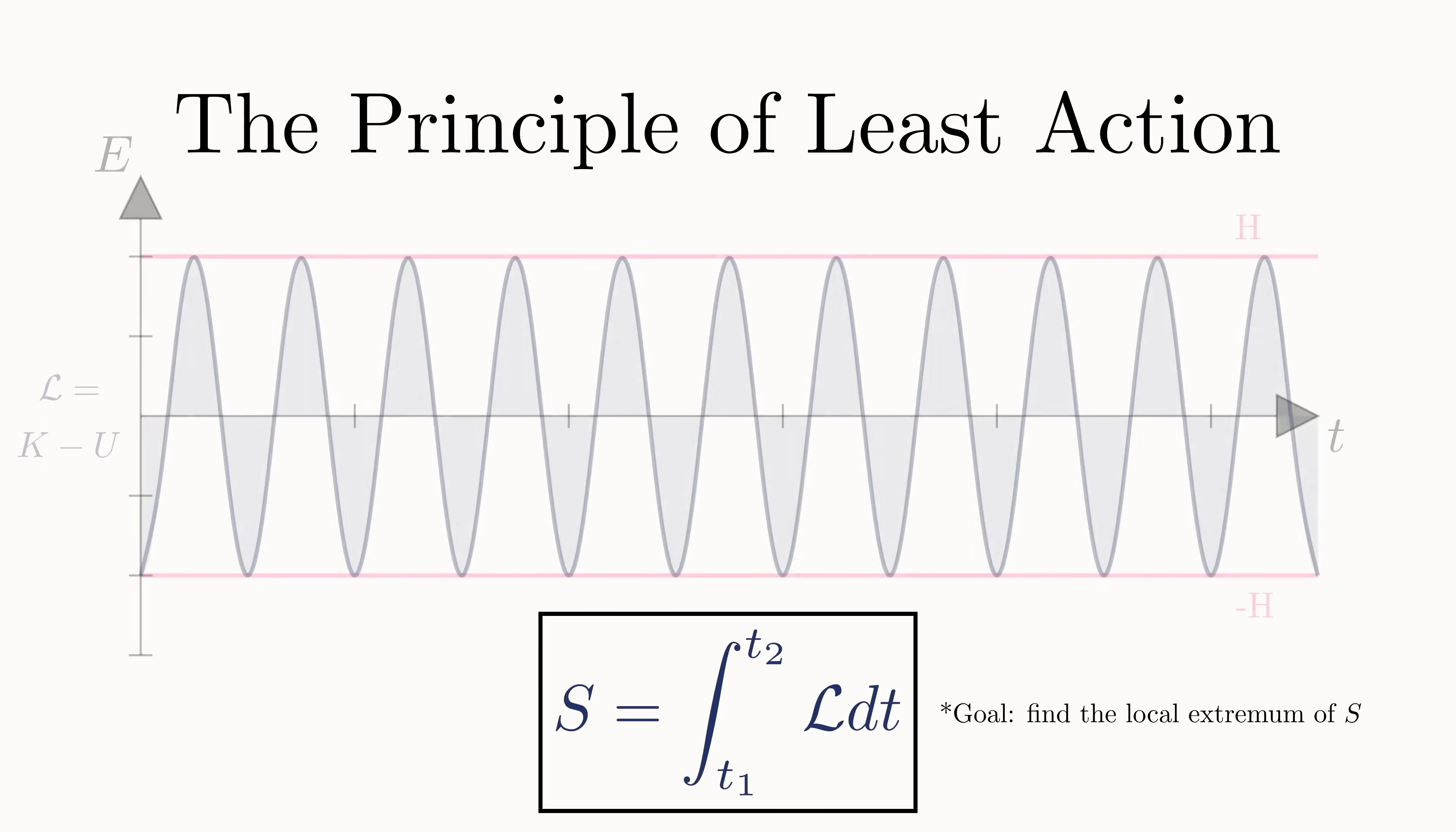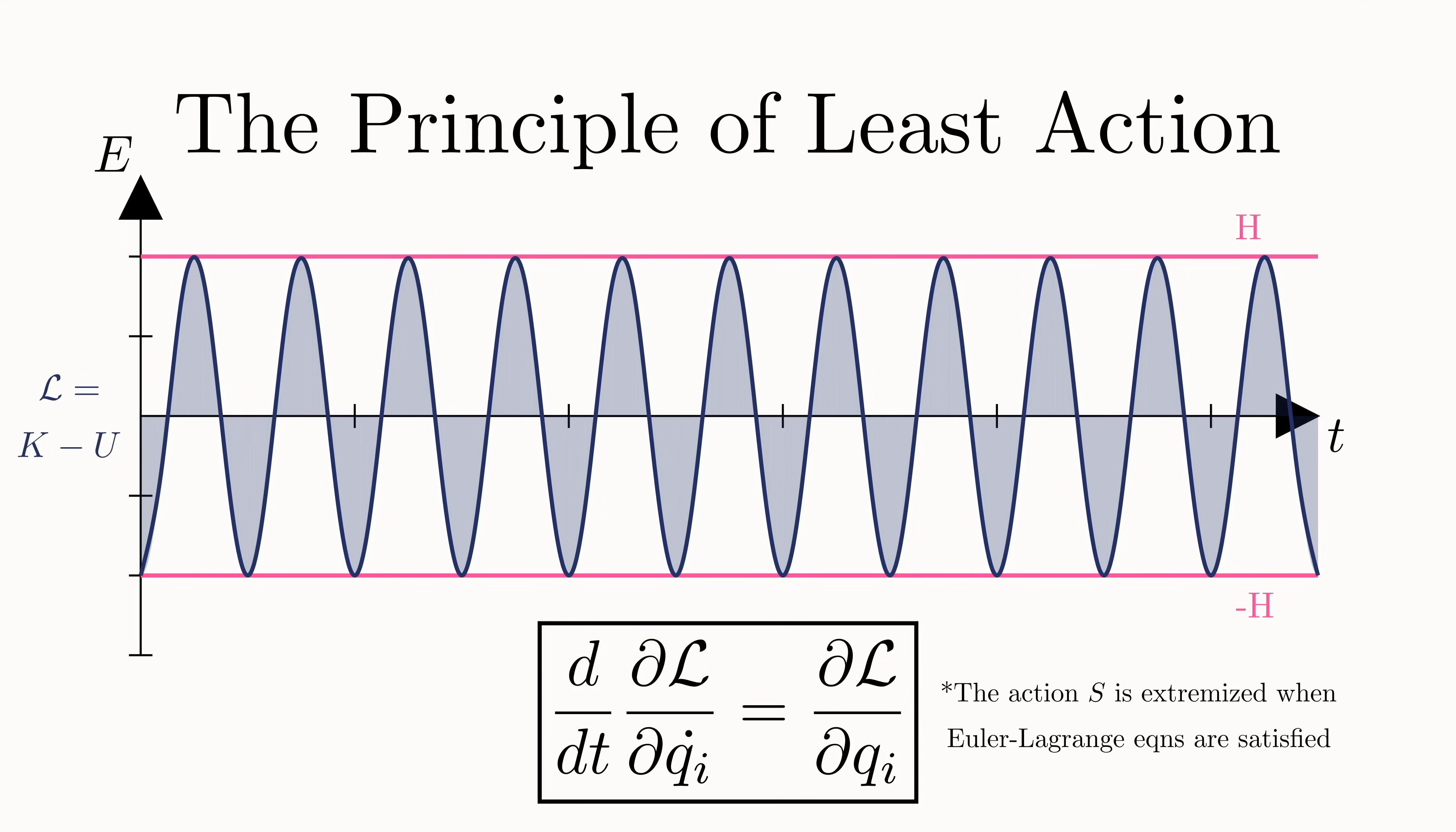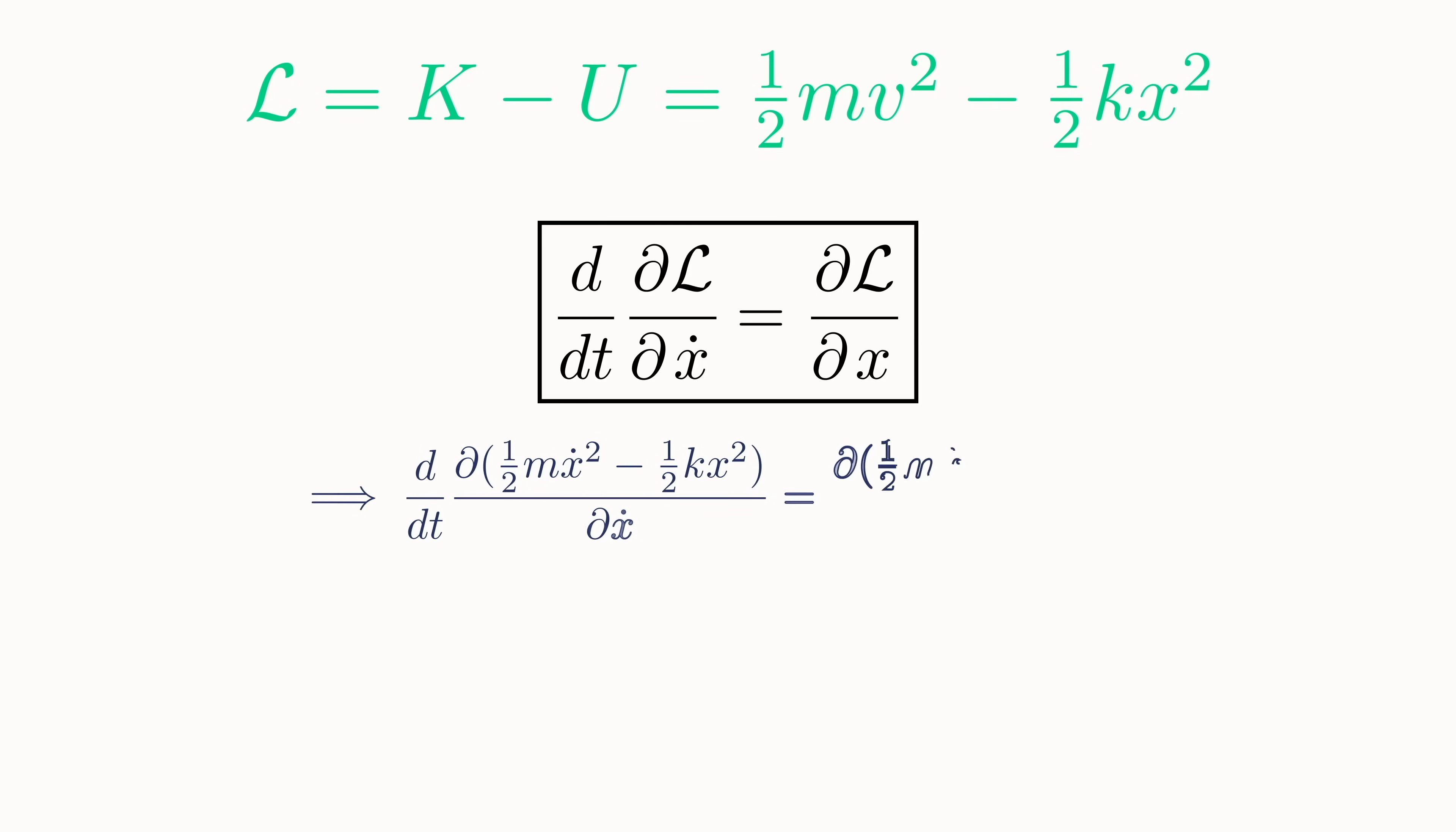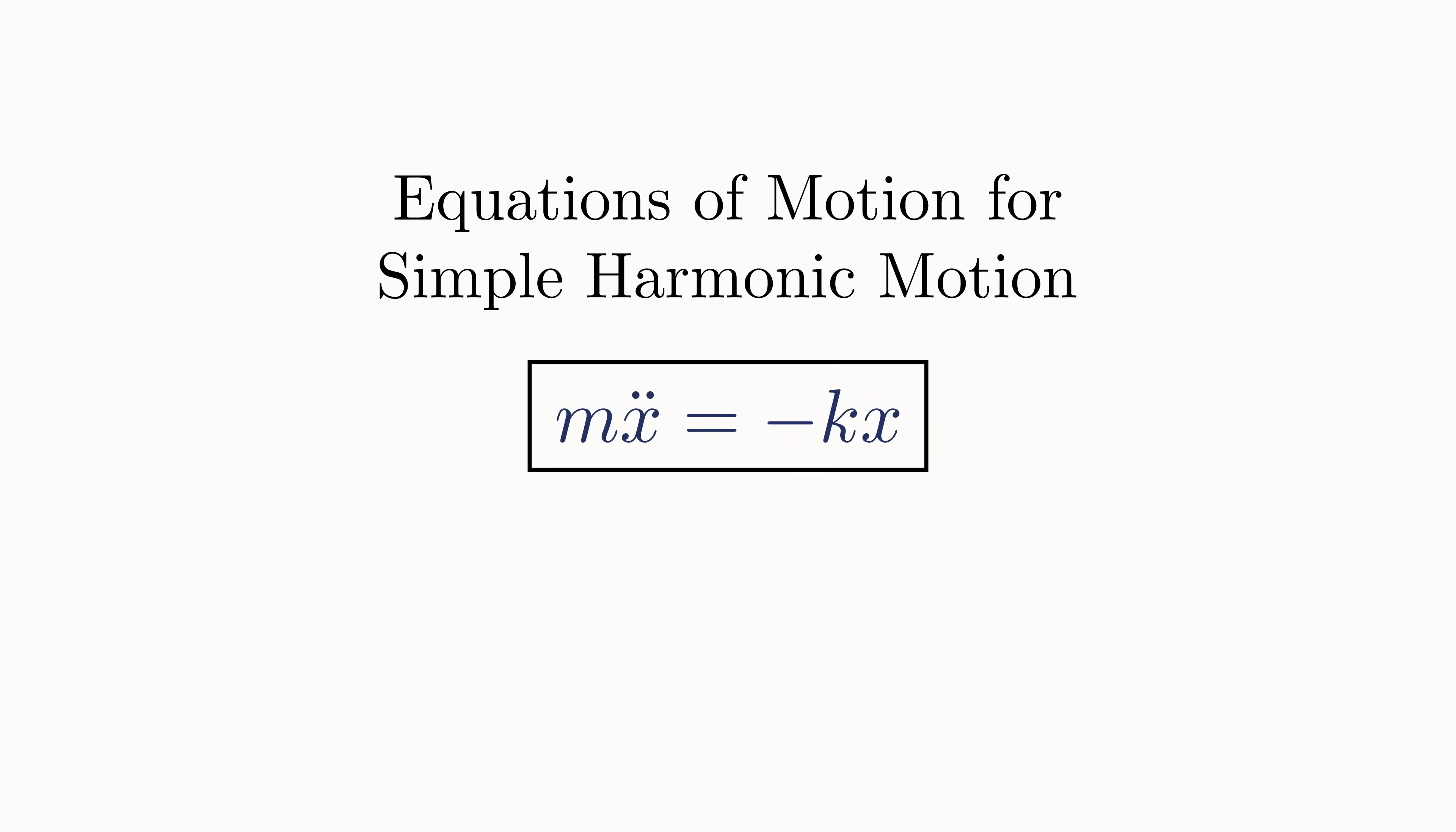In the context of this graph, the principle corresponds to extremizing the area under the curve, and the condition that needs to be satisfied for the action to be extremized is the Euler-Lagrange equations. So now we can see that according to Lagrange, we don't need to worry about forces at all. We simply need to write down the Lagrangian of this system, and plug it into the Euler-Lagrange equations. It's then just a matter of algebraic manipulation to arrive at the equations of motion, which are the exact same we got when we used Newton's approach.